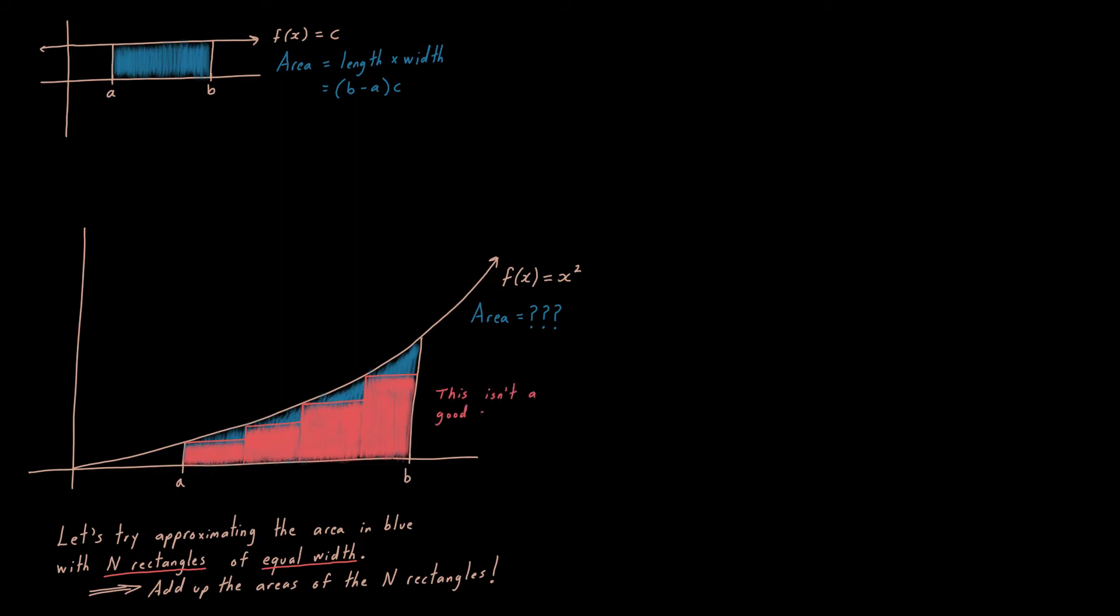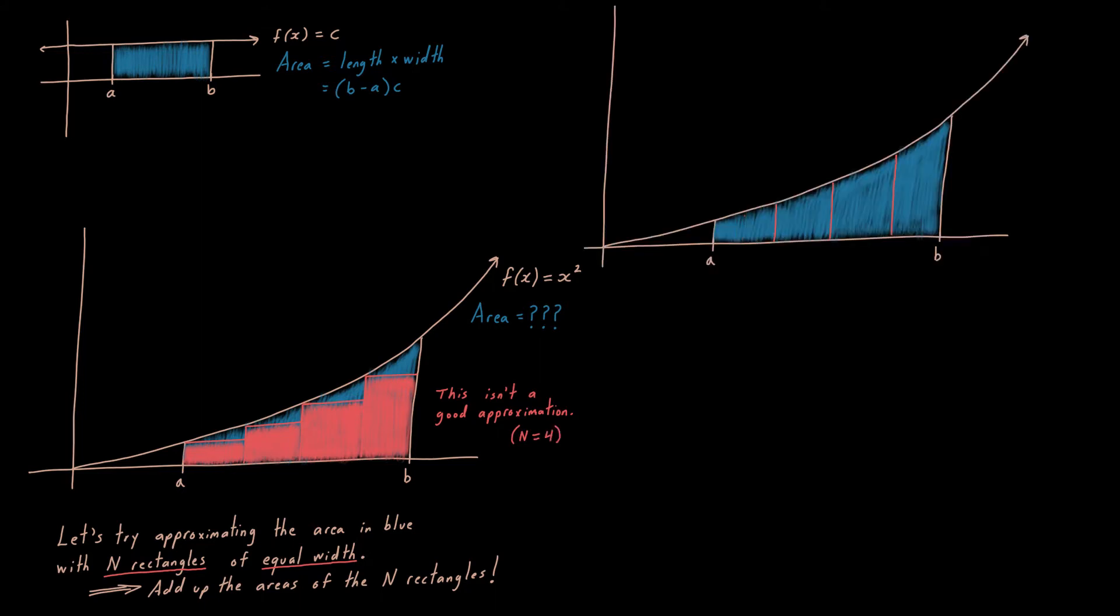But for N equals four, this is not really a good approximation. Look at all that blue space left over. So how about I go up a notch to N equals eight. Again, I shoot off eight rectangles of equal width right off the x-axis. I'm going to shade them on in red. And yeah, keep going. Keep on going. Three more, two more, and one more. And I am done. Now with this, I feel like I am getting somewhere. And we are getting somewhere. N equals eight, we are getting somewhere for sure.